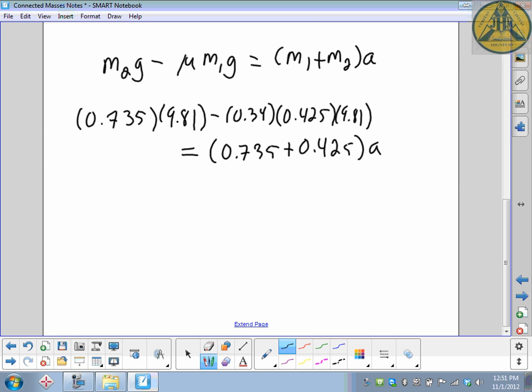0.735 times 9.81 comes out to be 7.21 minus 0.34 times 0.425 times 9.81, 1.42, that has to equal 0.735 plus 0.425, 1.16 times A. So the left side simplifies to be 5.79 equals 1.16 A. Divide both sides by 1.16, and we get an acceleration that rounds to 5.0 meters per second squared.